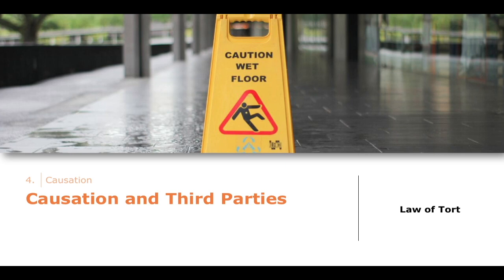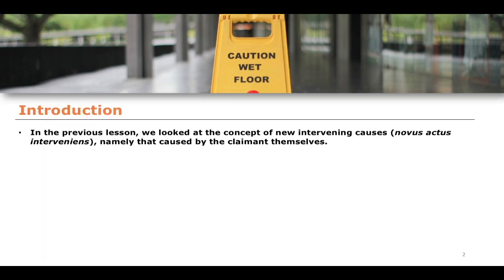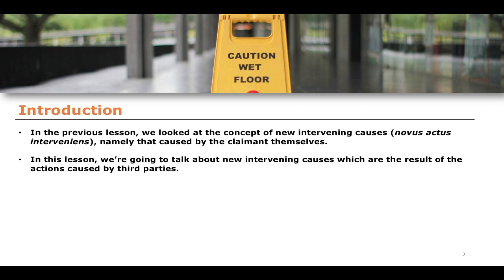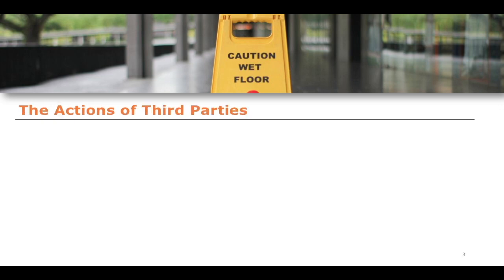The previous video spoke about novus actus interveniens as a result of actions caused by the claimant. This lesson is going to think about the same question but where a third party comes in and does something which may represent a new intervening cause. It should be noted that this new intervening cause needn't be negligent — it could be a negligent cause, but it could also be something that was non-negligent. This lesson we're going to talk about intervening causes which were the result of actions by third parties.